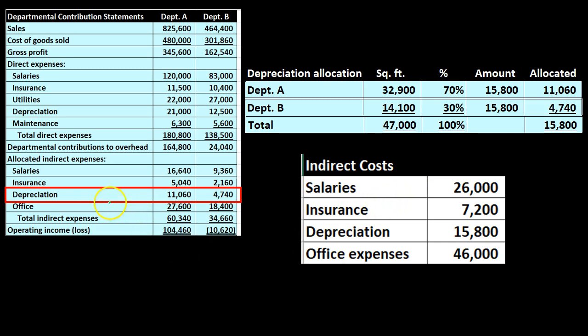Now we do the same for depreciation. We again use square footage, which seems appropriate for building depreciation. Department A has 32,900 square feet, Department B has 14,100, totaling 47,000. This gives us the same 70/30 percentage breakout. We apply this to the total depreciation of $15,800: 70% times $15,800 equals $11,060 for Department A, and 30% times $15,800 equals $4,740 for Department B, totaling $15,800.